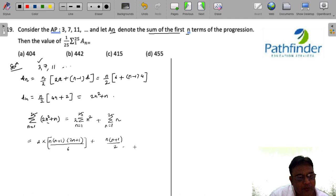All we need to do is put n is equal to 25 because this was n from 1 to 25. So if you put n = 25, what do you get? 25 × 26 × 51 / 6 plus 25 × 26 / 2.